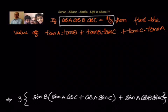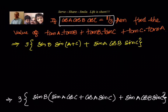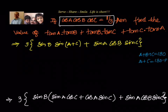So the next step will be: we have the factor of 3 from the denominator, and inside the bracket we have sin B times sin of A plus C, plus sin A cos B sin C. We do a small side calculation: A plus B plus C equals 180 degrees, so A plus C equals 180 minus B. Therefore sin of A plus C equals sin B, because sin is positive in the second quadrant.